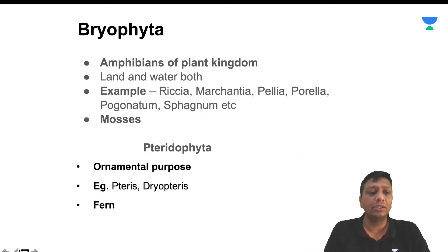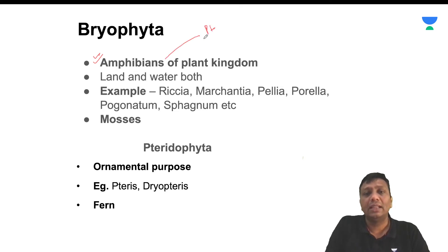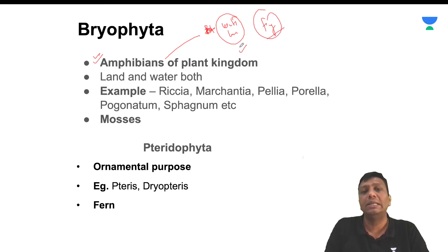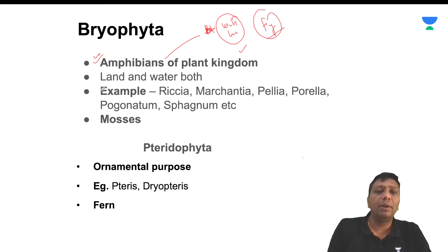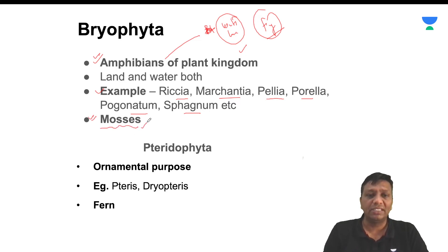Now we come to another group called Bryophyta. Bryophytes are also called the amphibians of the plant kingdom, because they grow on water and also on land — similar to frogs. Examples include Riccia, Marchantia, Palaea, Porella, Pogonatum, Sphagnum, and mosses. The mosses (kai) you can see on wet walls and slippery surfaces are all part of the bryophyte group.